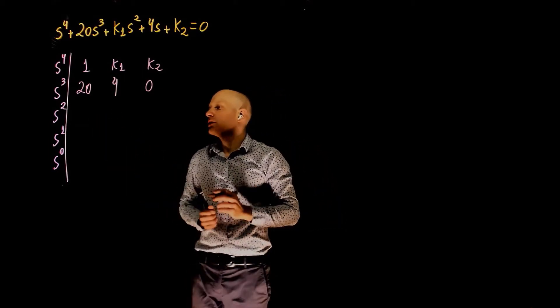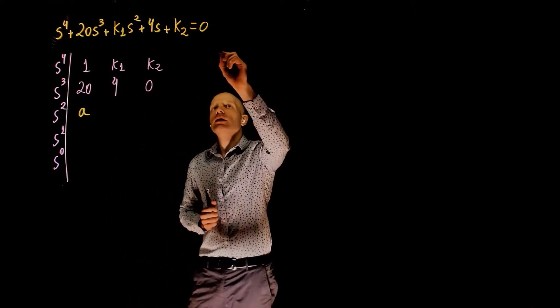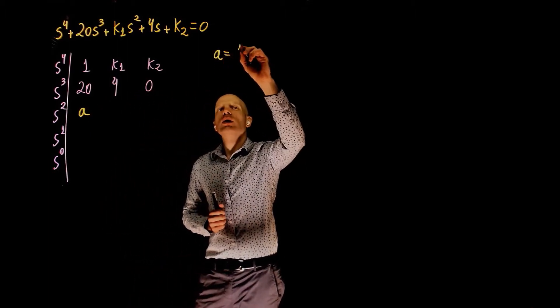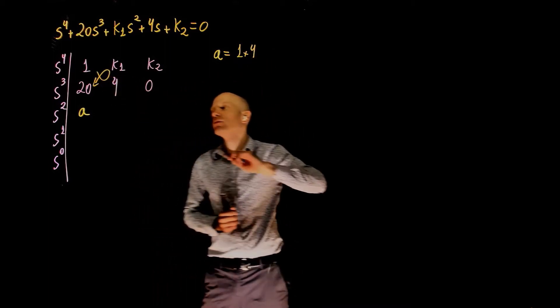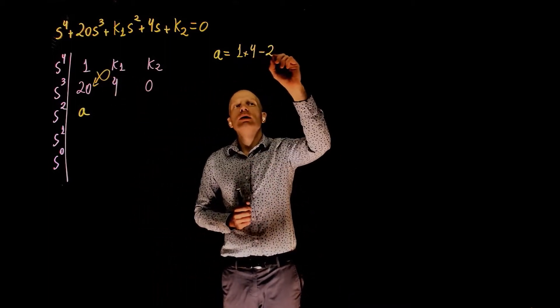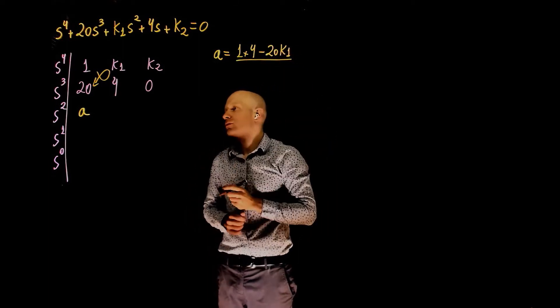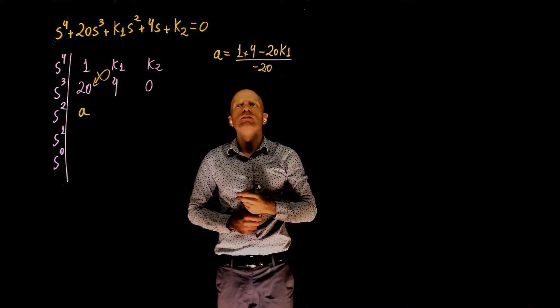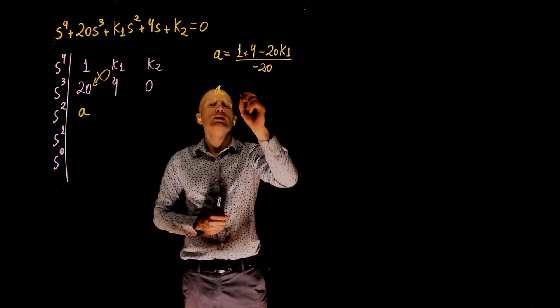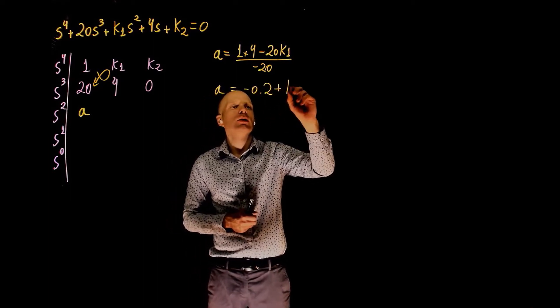So, the first element here, let's call this element a. a is 1 times 4 minus 20k1 divided by negative 20. So, a is negative 0.2 plus k1.